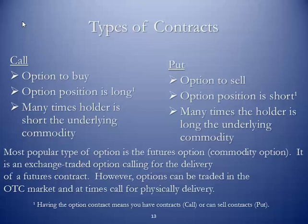On the flip side, we have the put option. This is an option to sell the underlying contracts. The option position here is short because they have the right to sell. Many times the holder is long the underlying commodity. For example, a crude oil producer may want the right to sell their crude — or to sell contracts in the financial marketplace — at a predetermined price stated in their option. To the extent that they exercise, they have the right to sell. We consider their option position to be short because their physical commodity position is, in fact, long. The most popular type of option is the futures option or commodity option — an exchange-traded option calling for the delivery of a futures contract. However, options can be traded in the over-the-counter market and at times can call for physical delivery.